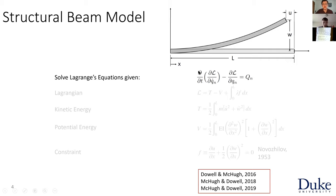The inextensibility condition means that this beam cannot elongate along its arc length — the arc length is always constant. The way we set up these equations is to solve Lagrange's equations. The Lagrangian for this problem is kinetic energy T minus potential energy V, but we also include a Lagrange multiplier integral. That is what enforces the inextensibility constraint — it enforces that the arc length is always constant.